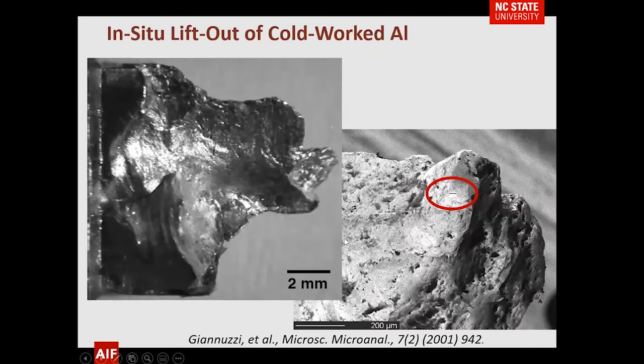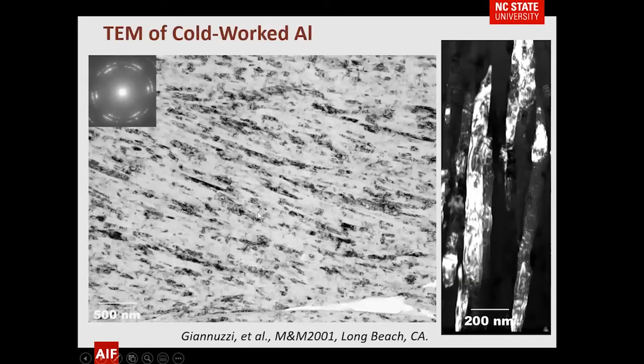You don't have to have a nice flat sample — if you can get something into your FIB, you should be able to analyze it. Here's a piece of cold-worked aluminum with a feature where we've made the cut. You've got X-ray information and you can see the grains of this particular aluminum.